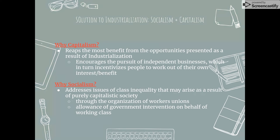Our group concluded that the best solution to the issues arising from industrialization would be a combination of capitalism and socialism. Capitalism encourages economic independence, incentivizing people to work in their own interests — in theory, workers reap as much as they sow. However, capitalism also gives way to monopolies and corporate abuses against overworked and underpaid employees. Socialism addresses issues of class inequality perpetuated by industrial economies through the organization of workers' unions and allowance of government intervention on behalf of the working class.